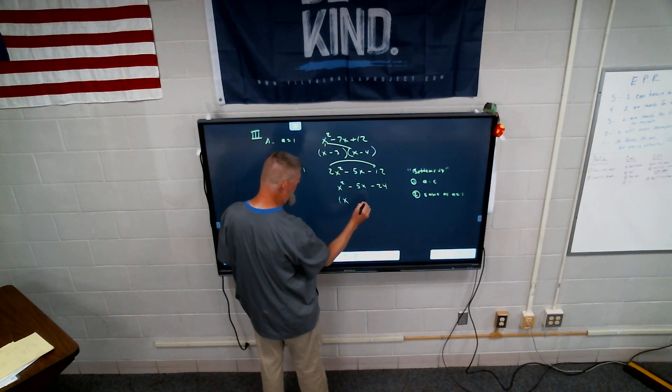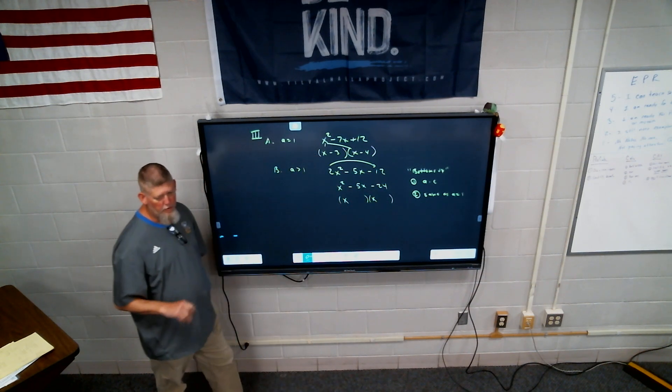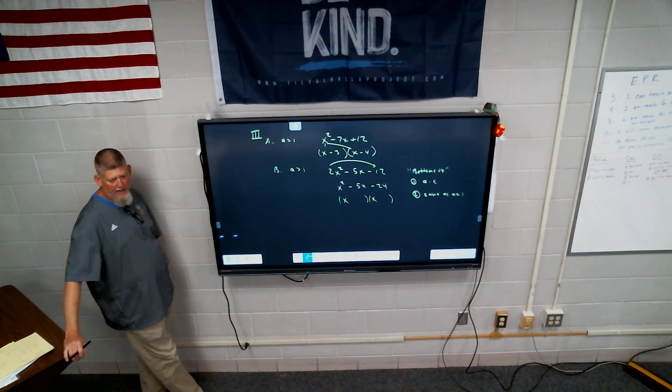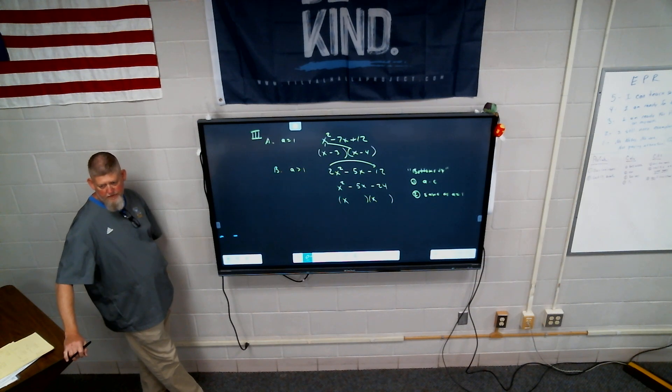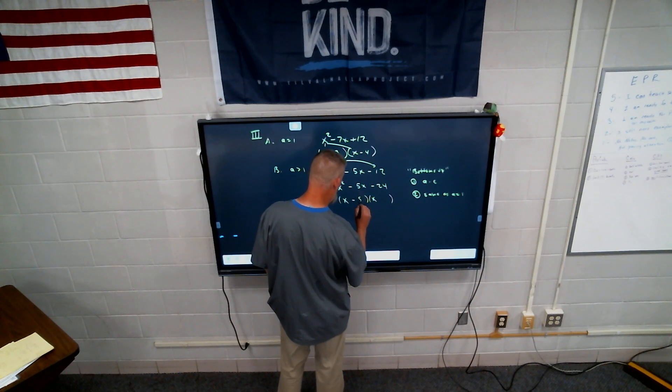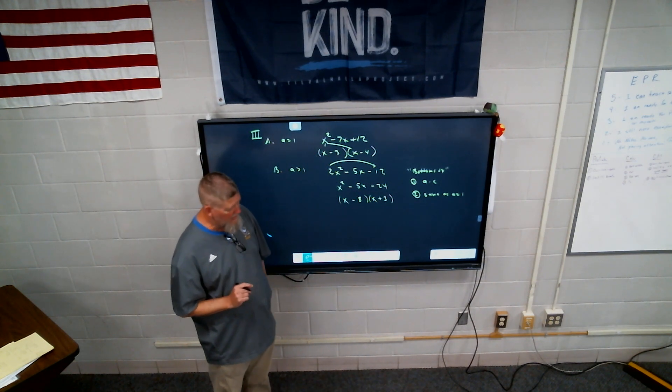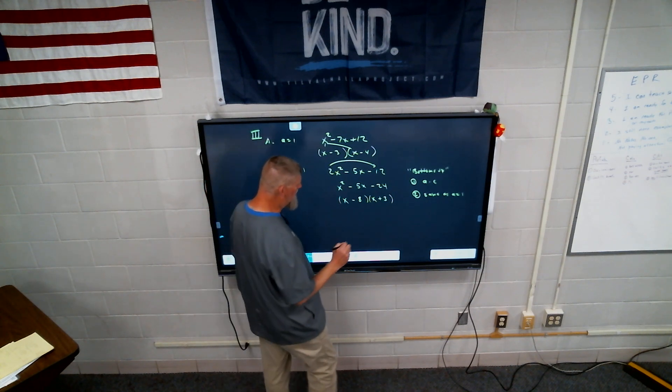And then number two, you do the same as a equals one. So you split up your x squared, x and x. We'll multiply as to equal negative twenty-four, but add to equal negative five. Eight and three. And what signs are there going to be? Negative eight, positive three. Negative eight. That's breaking though. Positive three. And right here is the reason why I don't like bottoms up, because a lot of kids see that. Oh, I'm done. Nope.